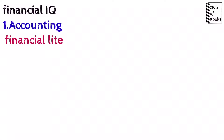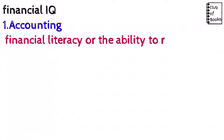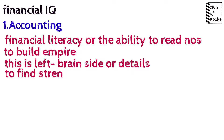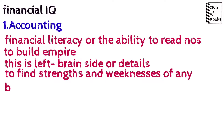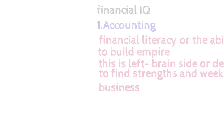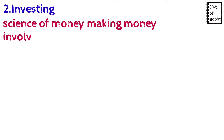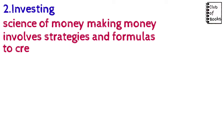The first step is accounting — financial literacy, the ability to know and read numbers and to build an empire. This is left-brain, detail-oriented work; we have to find the strengths and weaknesses of any business. The second step is investing — you should know the science of making money with money, involving strategies and formulas. This uses the right brain, which is creative.